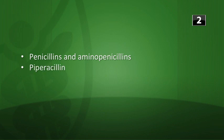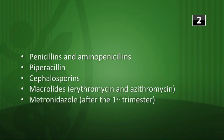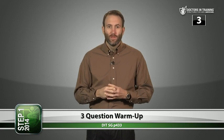Macrolides, specifically erythromycin and azithromycin, are safe. Metronidazole is safe after the first trimester. Nitrofurantoin can be used commonly for UTI treatments as well. Next question: what structures form Hesselbach's triangle?